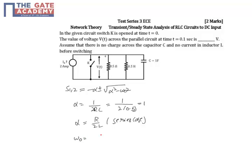Omega naught equals 1 by root LC, which equals 1 by root of 0.5, which will be 0.707. The value of omega naught will be the same for either case, be it series or parallel.